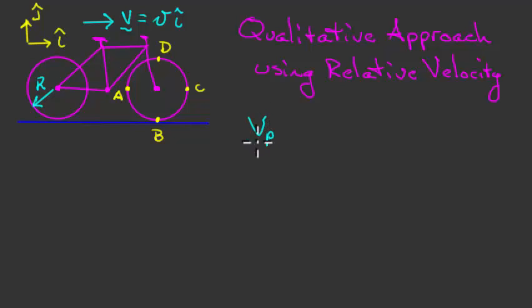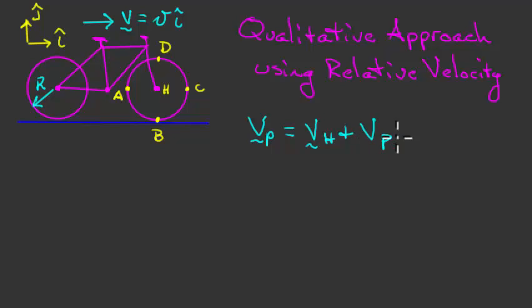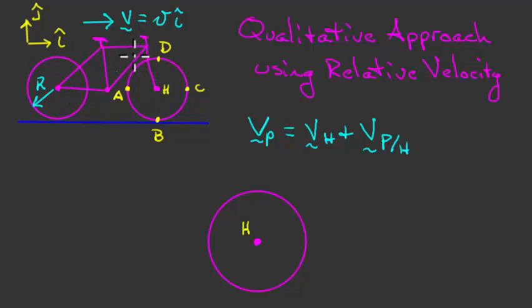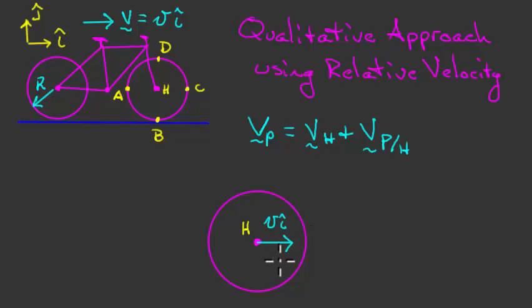Our starting point is this expression: the velocity of any point P on the wheel equals the velocity of the hub H, plus the velocity of point P relative to the hub. The hub is attached rigidly to the frame, and since the frame is translating — not rotating — every point on the frame has the same velocity. So if the seat moves at velocity V in the i-hat direction, the hub also has velocity V in the i-hat direction.